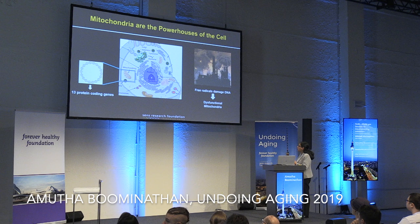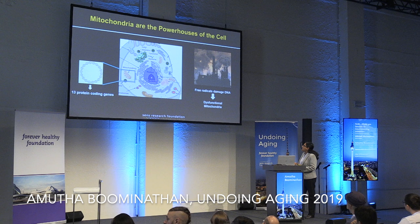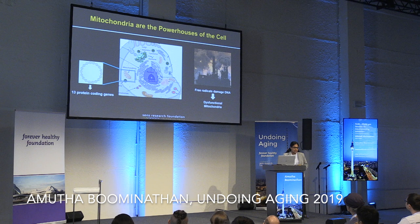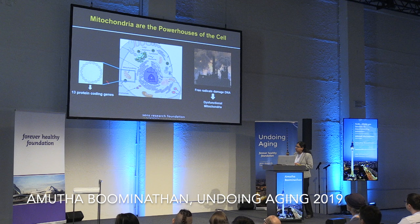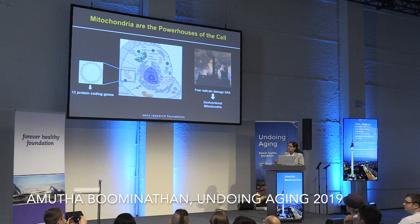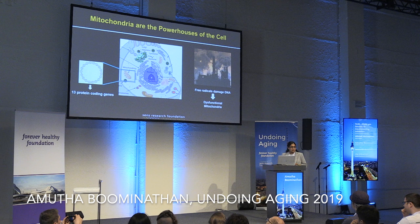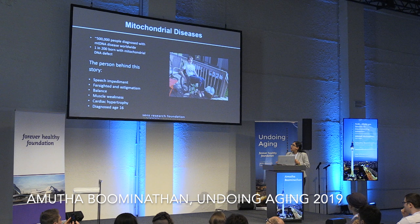You have an organelle responsible for producing more than 90% of your energy demand. But at the same time, the side products it produces — free radicals or reactive oxygen species — are in close proximity to the DNA that produces vital subunits of the OXPHOS relay. Close proximity to this oxidative stress, replicative errors over time, and inefficient repair mechanisms predispose accumulation of mutations over time.